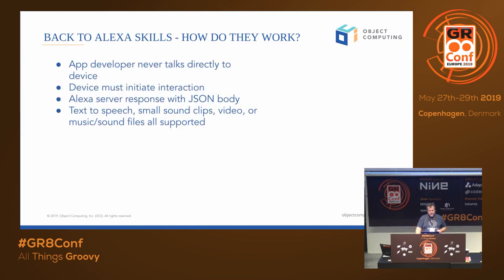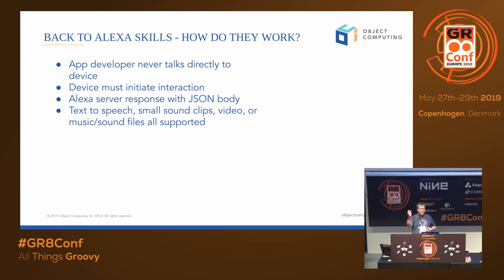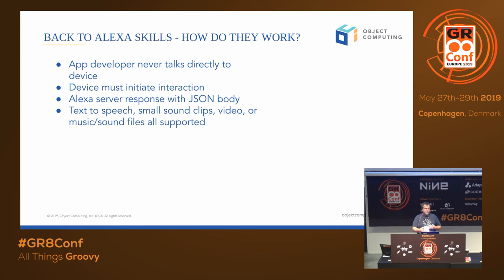So let's get back to Alexa skills and how they work. As an application developer, you are never talking to the device directly. The device talks to the Alexa service on AWS, and then you're talking to AWS directly. It passes the request back through things called intents. When it figures out what intent you mean when you talk, it tells it what code to invoke to generate a response. It's all done with JSON — technically you could do this manually with Jackson, but they've got a nice API so you might as well use that.